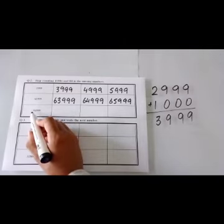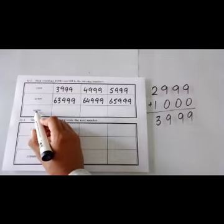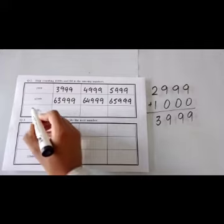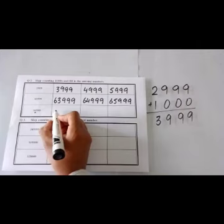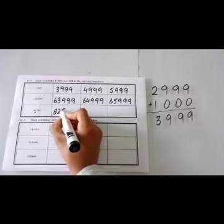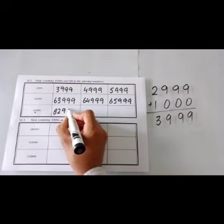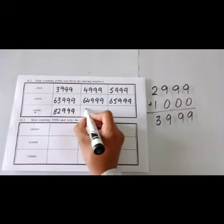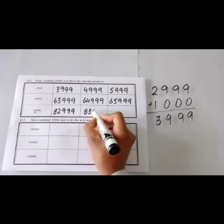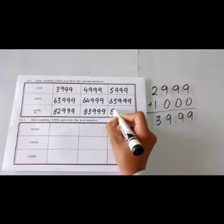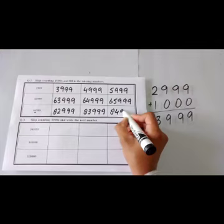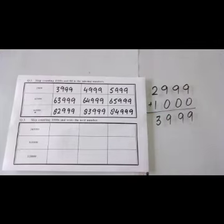The third part we have 81999. Here we have 1 at the 1000 place. When we skip 1000, we will get 82999, 83999, 84999.